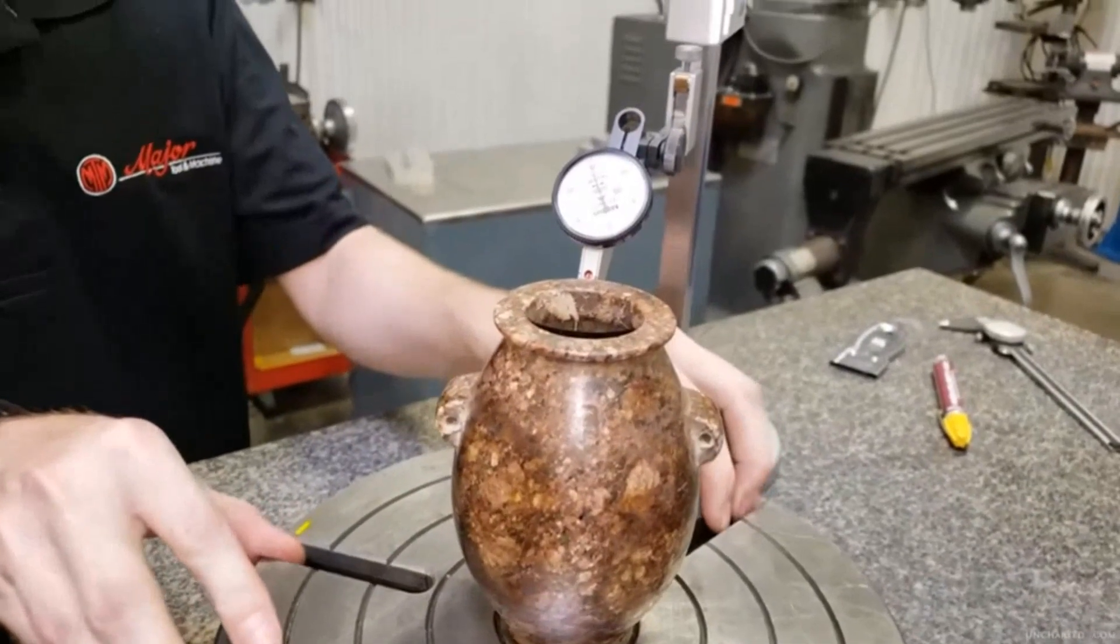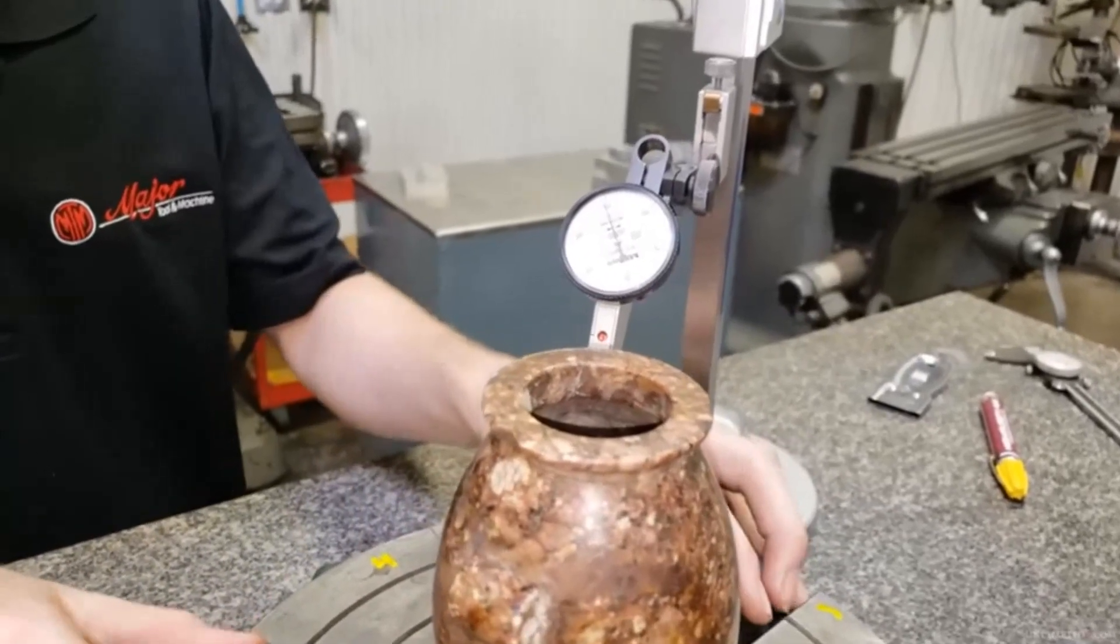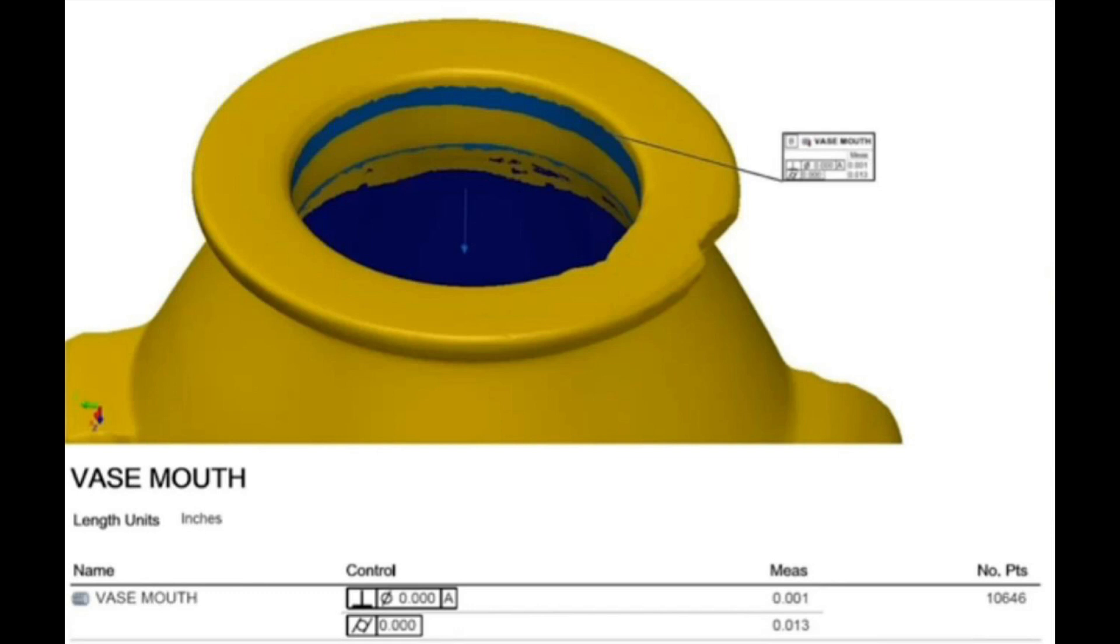not by handwork, as the evidence gathered by Alex Dunn demonstrates. The variations in symmetry and centering measure out to less than the thickness of a human hair,